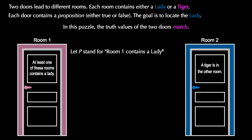To solve this problem, let's let P be the proposition room one contains a lady, and let's let Q be the proposition that room two contains a lady. We can then interpret the proposition on door one to be P or Q, while the proposition on door two is just not P.